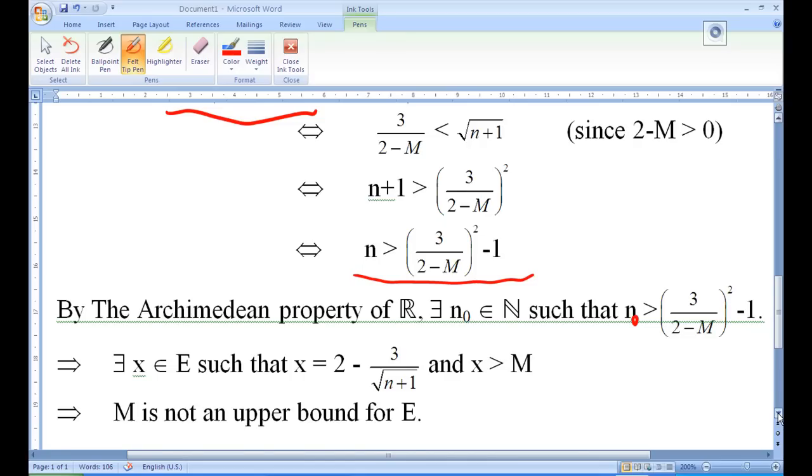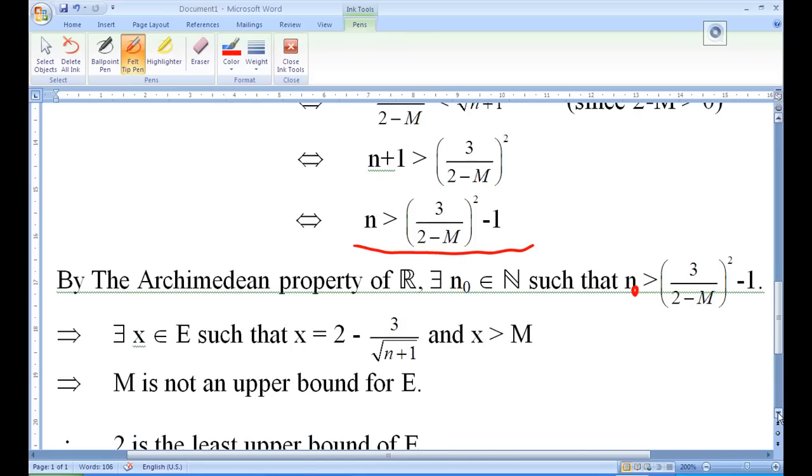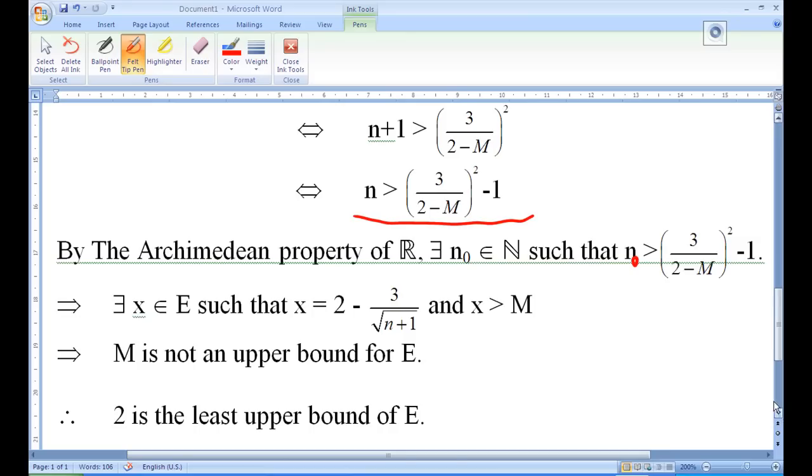So, any number less than 2 is not an upper bound, so 2 is the least upper bound of E. That's the end of the recording.